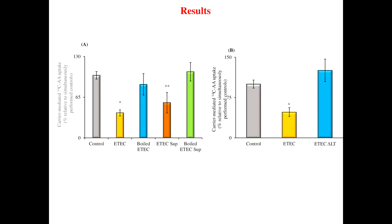Under in vitro conditions, confluent monolayers of Caco-2 cells were treated with ETEC, boiled ETEC, ETEC supernatant, and boiled ETEC supernatant, and assessed for vitamin C uptake. ETEC and ETEC supernatant inhibited ascorbic acid uptake, whereas boiled ETEC and boiled ETEC supernatant did not affect ascorbic acid uptake. This suggested that the heat-labile enterotoxin produced by ETEC could be responsible for the observed ascorbic acid uptake inhibition.